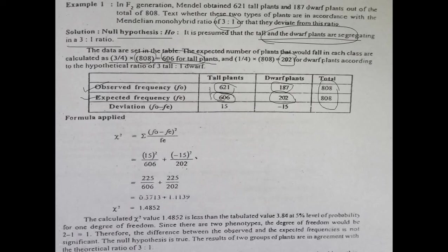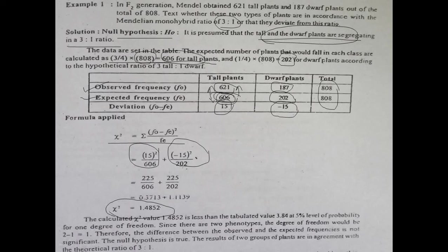The plants are deviating from the expected value — we need 606 but are getting 621, so by subtracting we get the deviation for tall plants, and similarly for dwarf plants. We put these values into the formula: summation of (O minus E) squared divided by E, calculating separately for tall plants and for dwarf plants.